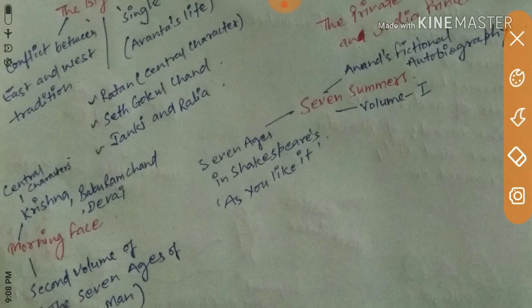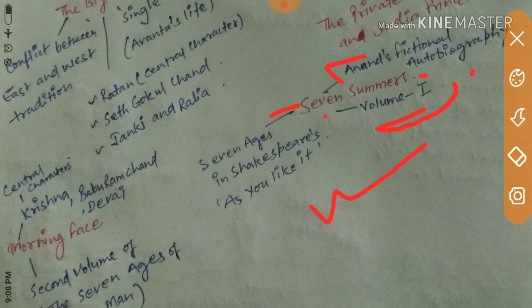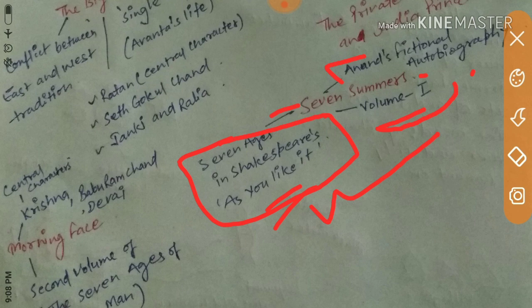Seven Summers is Anand's fictional autobiography. It is the first volume of a seven-volume fictional autobiography. The number seven is inspired by Shakespeare's As You Like It — so if asked which Shakespeare work Seven Summers is related to, the answer is As You Like It.